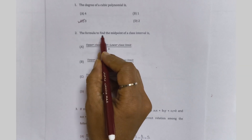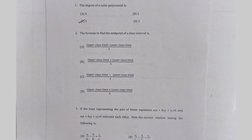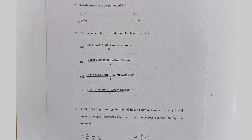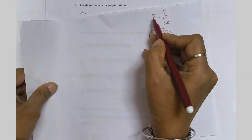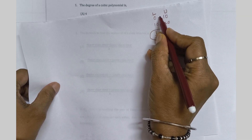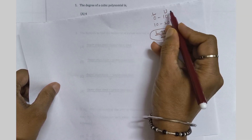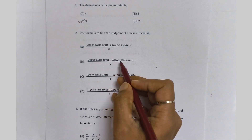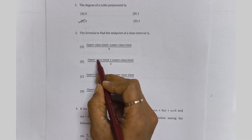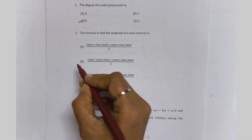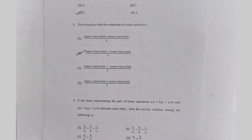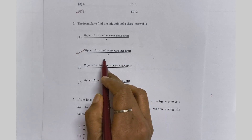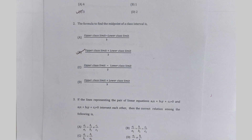Second question: the formula to find the midpoint of the class interval. For a class interval, how do we find the midpoint? The formula is upper limit plus lower limit divided by 2. For example, class interval 0 to 10 or 10 to 20 — lower limit plus upper limit divided by 2 gives the midpoint. Option B is correct.